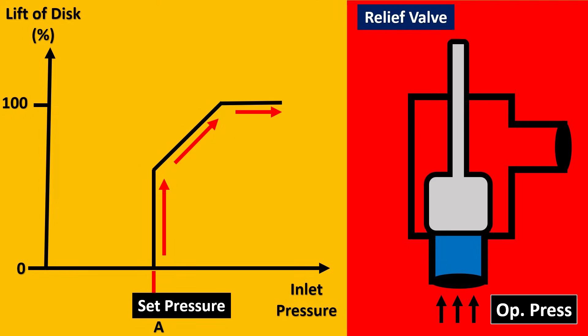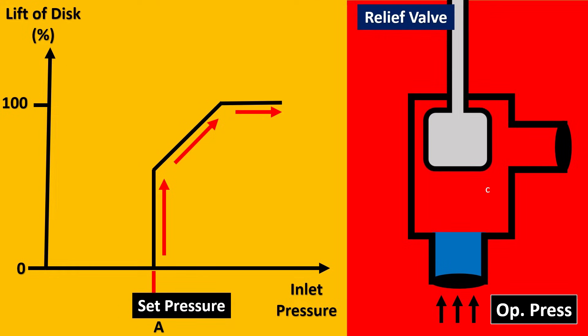When that is done, your relief valve is going to open and it is going to relieve all the pressure to your outlet. Very simple function — and now this is your 100% disc open position.